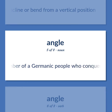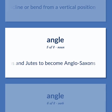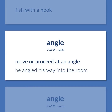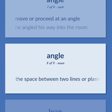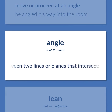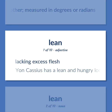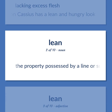ANGLE: A member of a Germanic people who conquered England and merged with the Saxons and Jutes to become Anglo-Saxons. Fish with a hook. Move or proceed at an angle — he angled his way into the room. The space between two lines or planes that intersect; the inclination of one line to another, measured in degrees or radians. LEAN: Lacking excess flesh — Jan Cassius has a lean and hungry look.